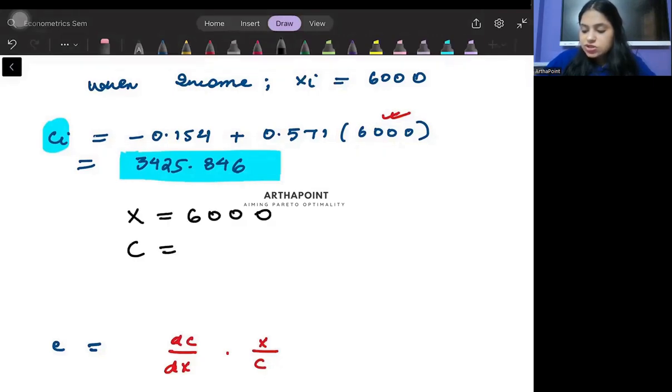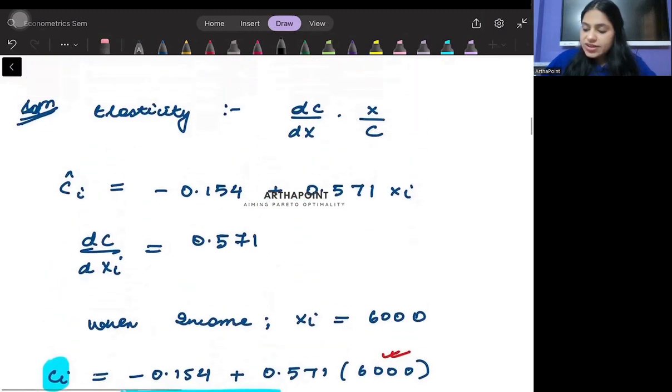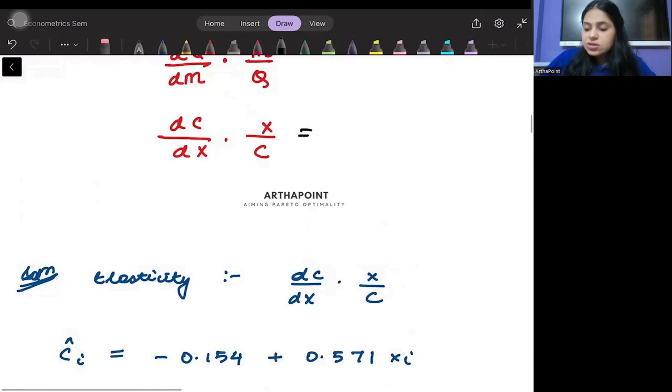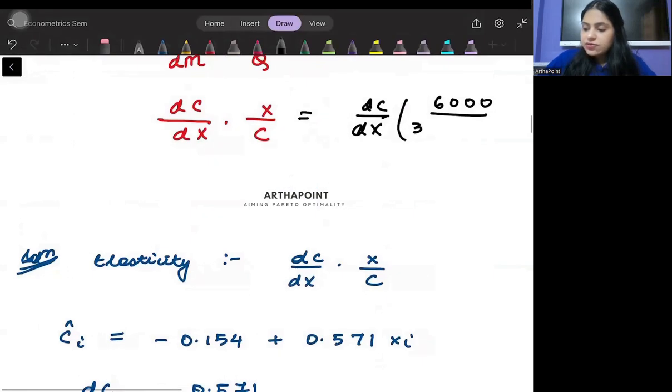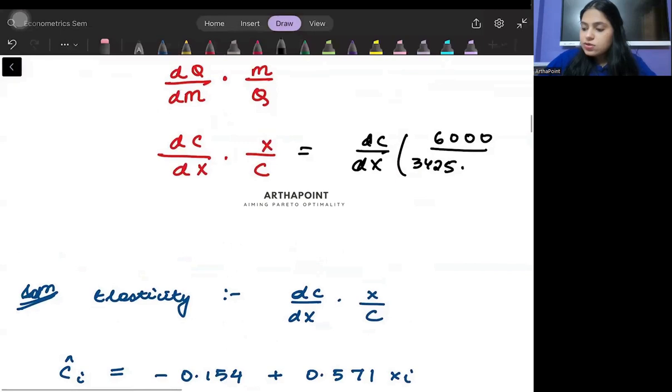then your consumption is coming as 3,425.846. I can just plug in those values here. So, it will be DC by DX into your income is 6,000 and your consumption that you have got is 3425.846.